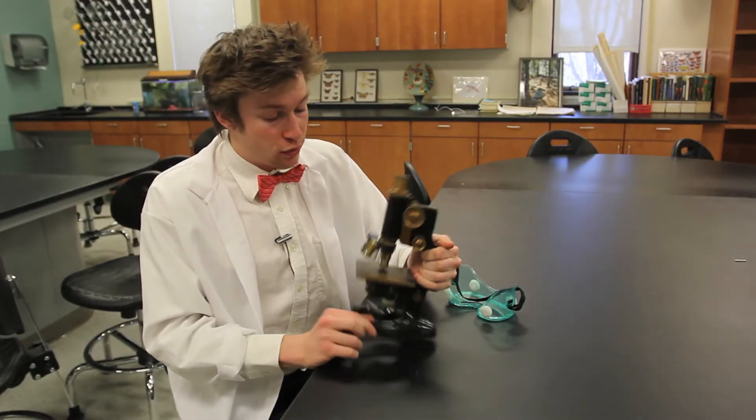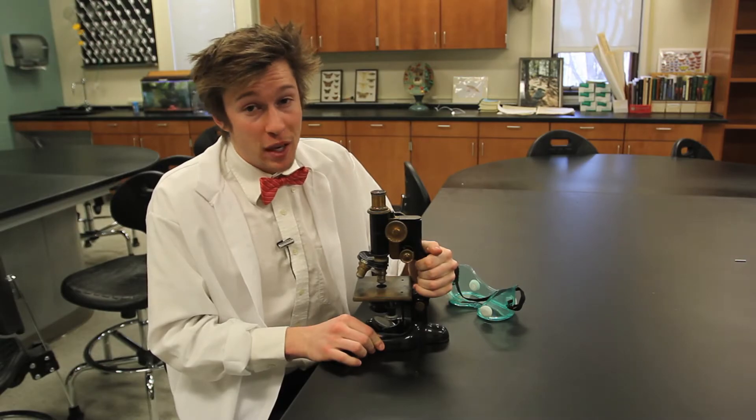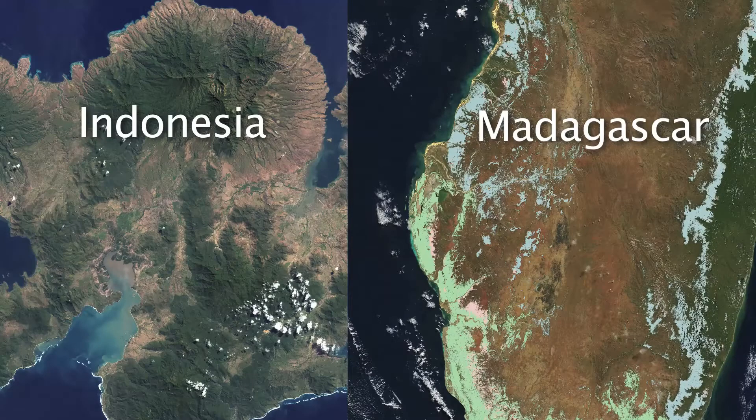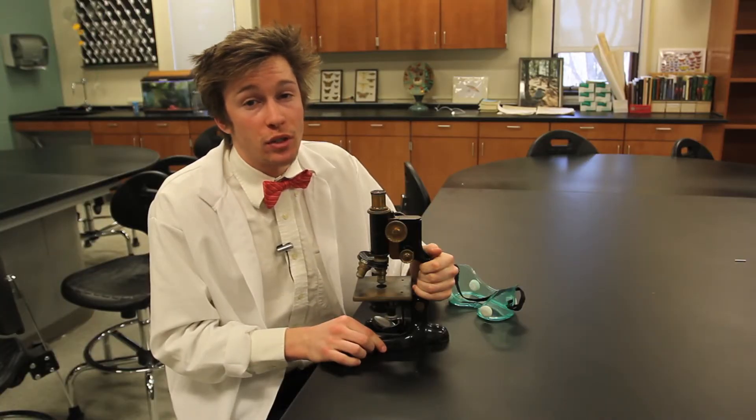Microscopes are important when observing plant anatomy. For example, from space, Madagascar and Indonesia look fairly similar. That is, mostly blue and green. However, if you look closer in person, they have completely different environments in which most species and land masses are different.